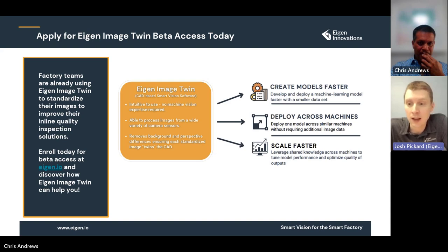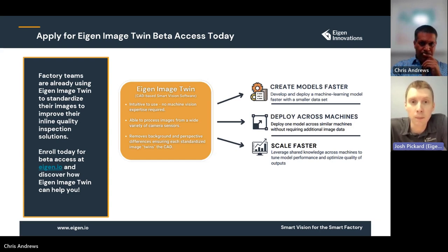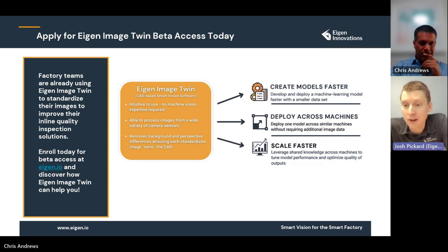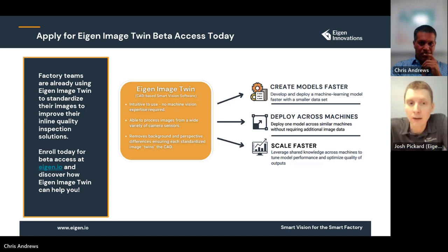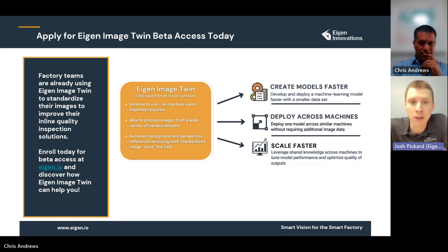We've taken our internal tool sets and productized them. The technology we've developed over the last five years for image standardization is now available to the public. Eigen Image Twin is now available for free beta access — you can enroll at eigen.io today. We're very excited to see what the public can do with this tool set. It's provided a lot of benefit within manufacturing to scale solutions, and we know there are all kinds of interesting things people will do with it going forward.